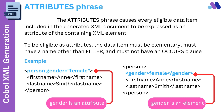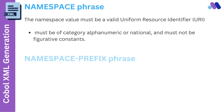We have an example here for element and attribute. In the first example, gender is an attribute. In the second example, gender is an element.